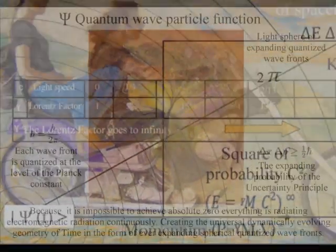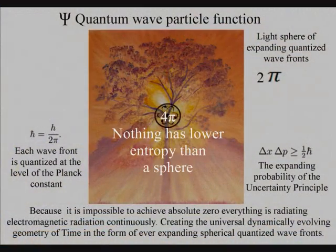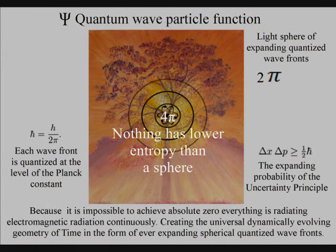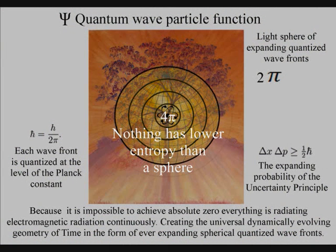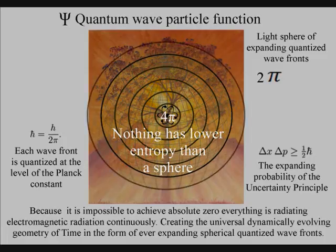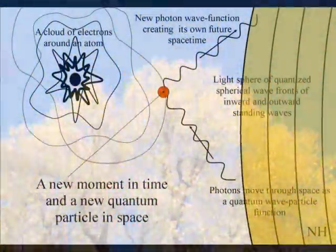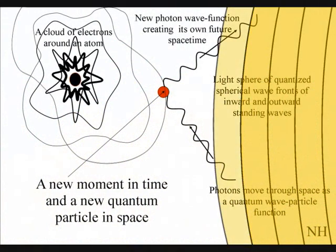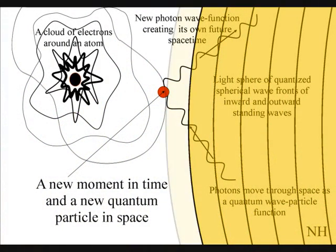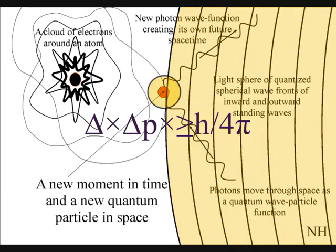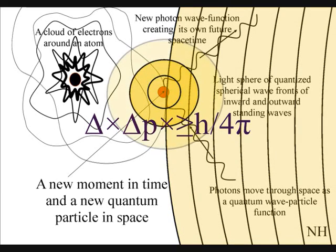The second law of thermodynamics falls out of this theory. The organisation for the spontaneous disorganisation of entropy is formed by the spherical symmetry of the quantum wave-particle function. The spontaneous absorption and emission of light forms the flow of time, with photon energy cascading down, forming greater degrees of freedom for the flow of entropy.